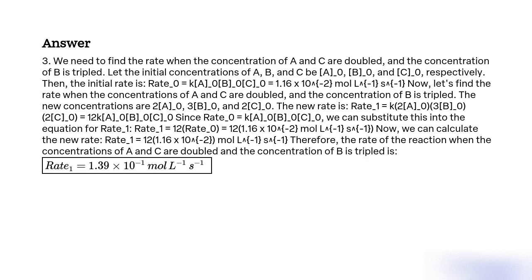Then the initial rate is: Rate0 = k[A0][B0][C0] = 1.16 × 10⁻² mol L⁻¹ s⁻¹. Now let's find the rate when the concentrations of A and C are doubled and the concentration of B is tripled. The new concentrations are 2A0, 3B0, and 2C0.